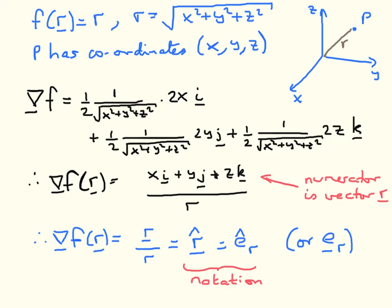Then from the chain rule, we multiply by the derivative of the argument of the square root. Differentiating with respect to X gives 2X. So overall the factor is 2X times a half times 1 over the square root, giving X over R as the I component of the gradient. The other terms in the J and K directions are worked out in a similar way. The factors of 2 cancel, leaving a common factor of 1 over R, and since R is the square root, 1 over the square root is just 1 over R.